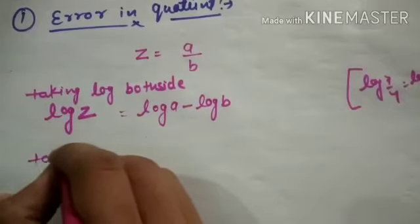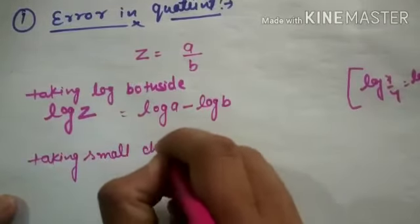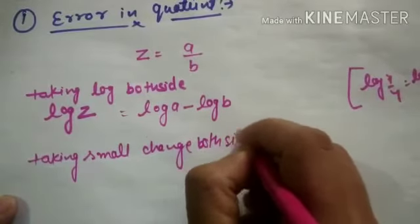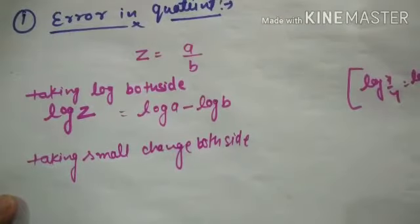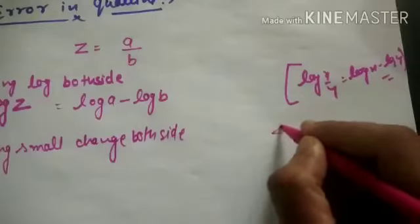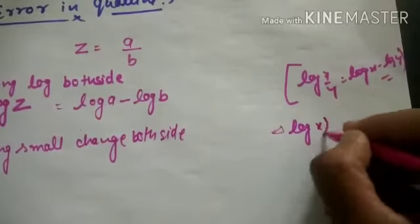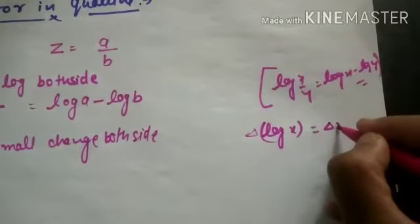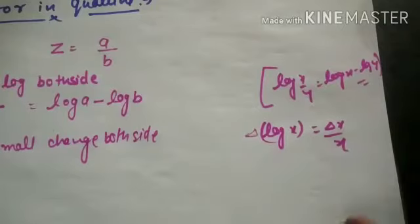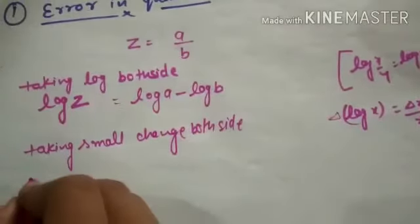Taking a small change both sides — we know that a small change delta in any logarithmic quantity is given by δX/X, as discussed in the previous video. So we can write δ(log Z) equals δ(log A) minus δ(log B), which means δZ/Z equals δA/A minus δB/B.